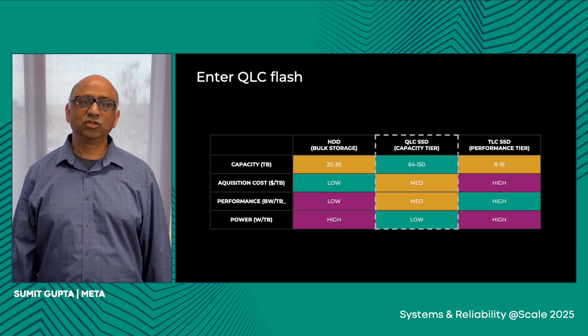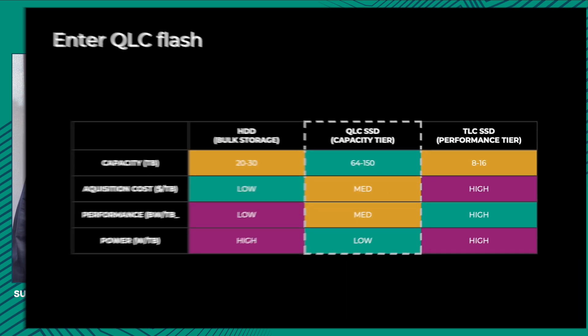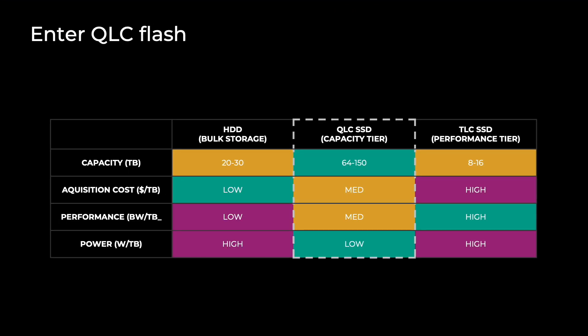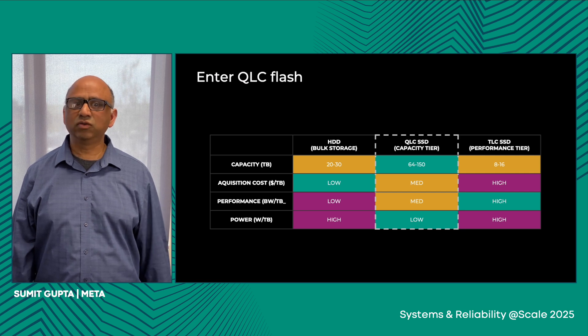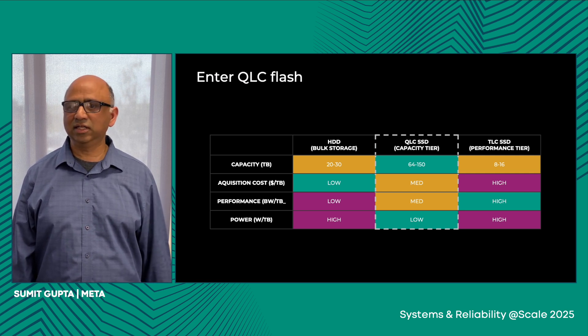This is where QLC flash enters the scene. QLC flash forms a very nice middle tier between HDD and TLC. In terms of capacity, QLC is the densest media — though that density comes with some problems. In terms of cost, QLC sits in the middle of HDD and TLC. In terms of performance, QLC performs much better than HDDs, allowing us to move hotter workloads from HDD to QLC. But in terms of power, this is where QLC shines the most: it has the lowest watt per terabyte compared to both HDD and TLC SSDs.